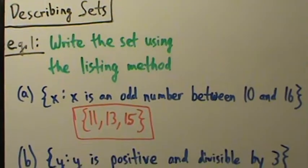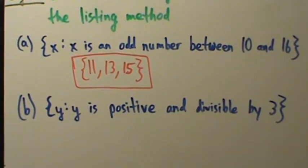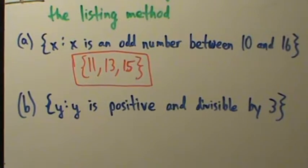Part B, a little bit different here. So part B is the set of all y. Remember, the variable name doesn't matter. Y such that y is positive and divisible by 3. So what are all the positive numbers divisible by 3? Well, 1 is not, 2 is not, 3 is, right? 3 is.